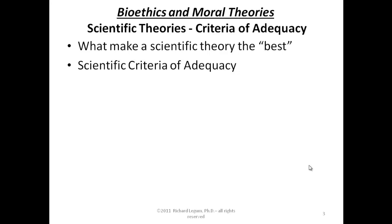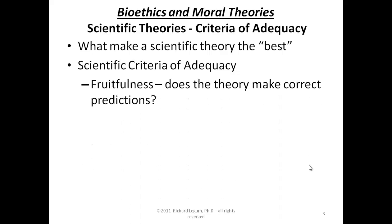What is it that makes a scientific theory a good one? One thing about good scientific theories is that not only can they explain the phenomenon, but they're also able to be tested because they make future predictions. This we might say is the fruitfulness of the theory — does the theory make correct predictions? The theory explains the phenomena, accounts for why the phenomena occur, but if it's a fruitful theory, it's able to predict what is going to happen in the future.